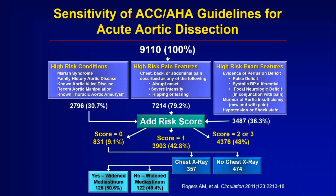In the middle, we look for high-risk pain features — particularly that abrupt onset, boom, of pain in the chest, back, or neck. On the right side, we look for high-risk exam features: a pulse deficit, a problem with blood pressure, or a murmur of aortic valve insufficiency. In a study of over 9,000 patients with aortic dissection, it's very rare for a patient not to have at least one of these factors — only about 10% have none. And of those 10%, if you look at their x-ray, the aorta looks big. This illustrates that if physicians pay attention to these features, we think we can diagnose about 95% of patients who have aortic dissection.